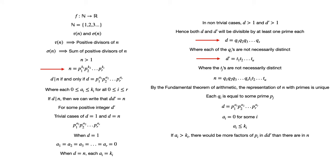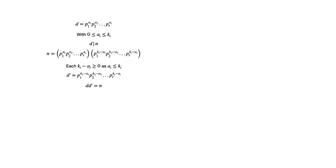Each ai cannot exceed ki, since the factorization is unique and ai > ki would mean there are more factors of pi in d·d' than there are in n. For the reverse direction, if d takes the form p1^a1 · p2^a2 · ... · pr^ar with 0 ≤ ai ≤ ki, then d divides n. This is since we can write n = p1^a1 · p2^a2 · ... · pr^ar multiplied by p1^(k1-a1) · p2^(k2-a2) · ... · pr^(kr-ar), where each ki - ai ≥ 0. We let d' = p1^(k1-a1) · p2^(k2-a2) · ... · pr^(kr-ar) so that d·d' = n. Notice also that d' > 0.